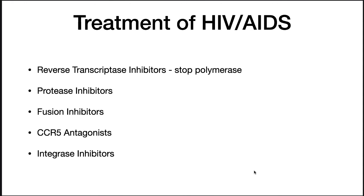There have been incidences in recent years where people have been cured of HIV through bone marrow transplants. These individuals had cancer, required a bone marrow transplant, and the transplant also eliminated HIV from their bodies. This may give an idea of how to treat this disease in the future, and CRISPR also holds the possibility of completely eliminating HIV.